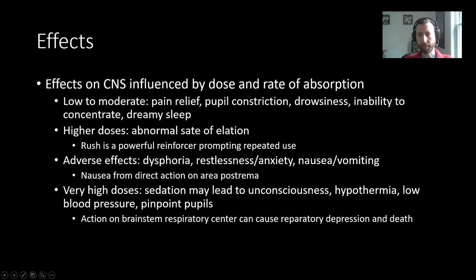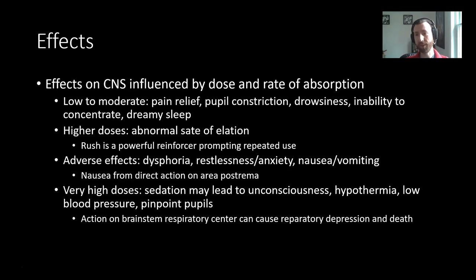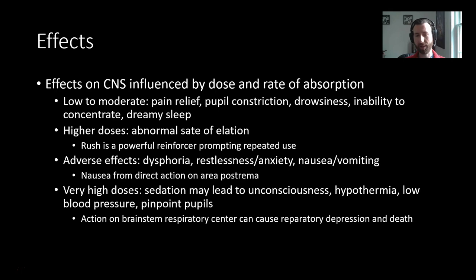The effects of opiates on our central nervous system are influenced dramatically by the dose and the rate of absorption — how much you're taking and how quickly it reaches target tissue are very important. At low to moderate doses, we see pain relief, pupil constriction, drowsiness, inability to concentrate, and dreamy sleep. At higher, more abusive-type doses, we might see an abnormal state of elation — that euphoria, or positive affect, a good feeling. This rush is a powerful reinforcer and something that prompts repeated use.